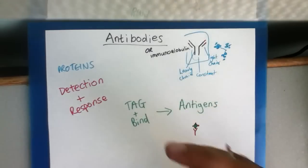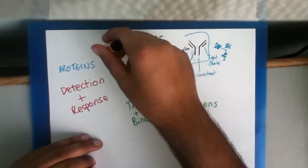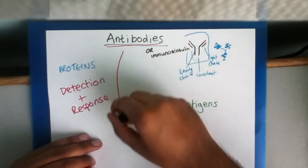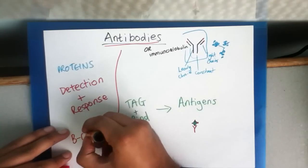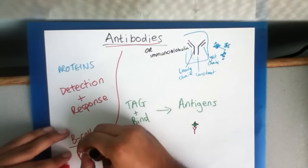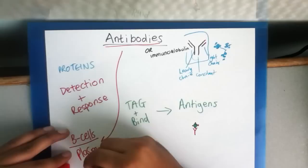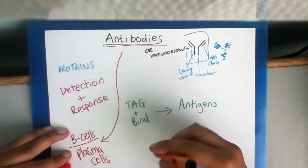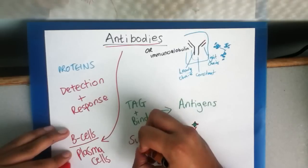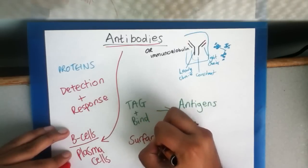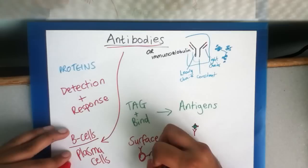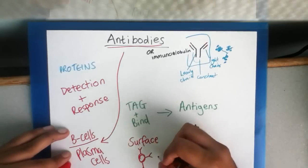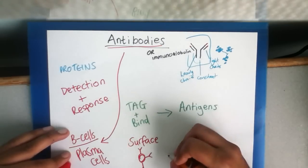So antibodies themselves, here, they are produced by B cells, or plasma cells. And they can appear on the surface of a cell. So we have a cell here. And they can be present on the surface, like this. Or they can be secreted, for example, into the blood.